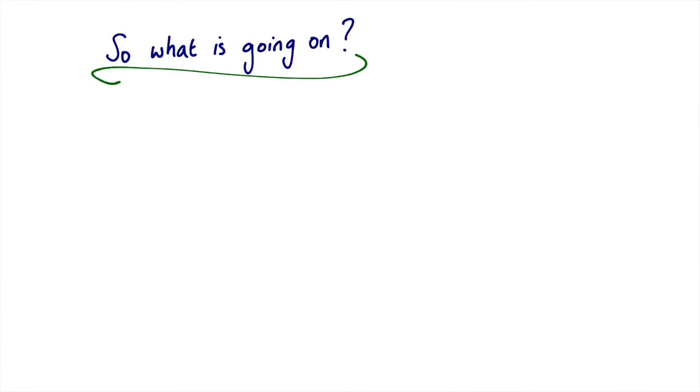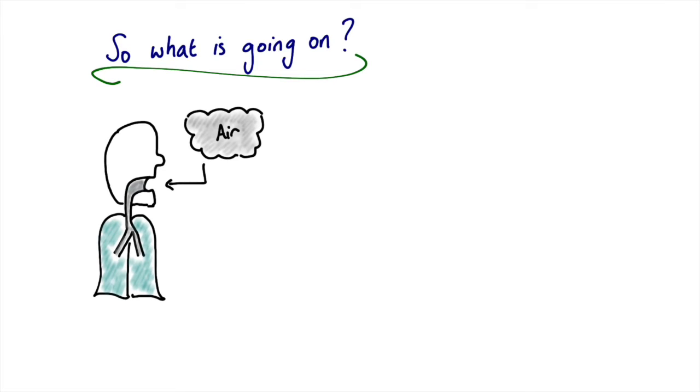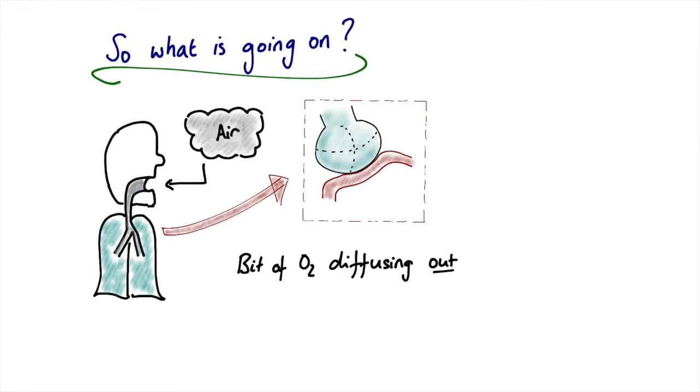Before we go on to talk about nitrous, we'll just consider what happens during the respiratory cycle when a patient's breathing air. So we've got our patient breathing air, and we focus in on the alveoli and pulmonary capillary. Now during the respiratory cycle, there'll be a net diffusion of oxygen out of the alveolar space into the pulmonary capillary.